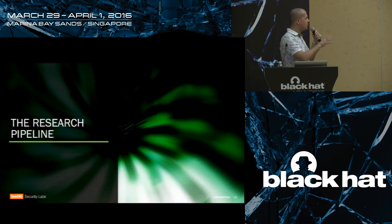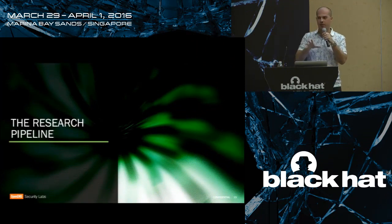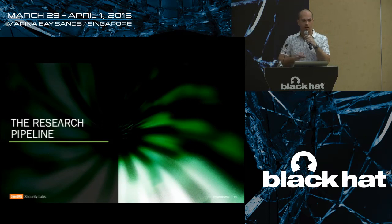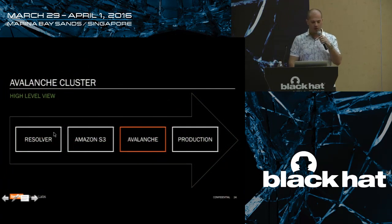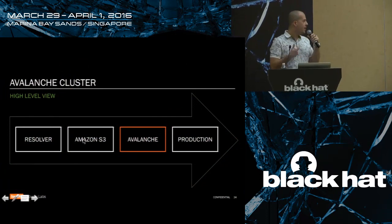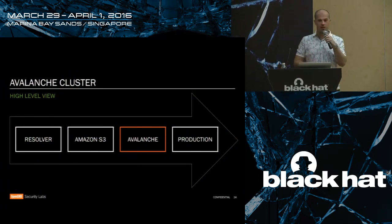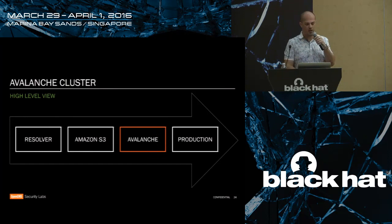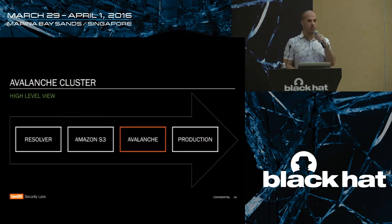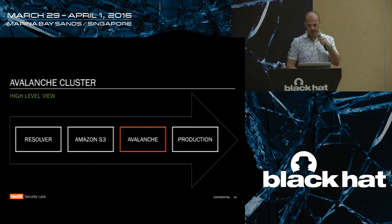The research pipeline. Now that I've described the Avalanche project, I want to explain how we actually use it to process the traffic we see every day. At the high level: we have our resolvers, which sync up with Amazon S3 and copy locked chunks every 10 minutes to S3. This is where Avalanche kicks in — we download the chunks, replay them, and do classification. After classification, once we've detected things, we send those results to production for blocking, domain tagging, or further investigation.